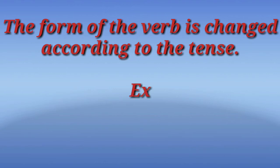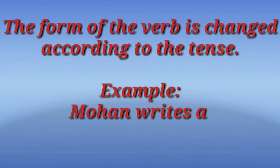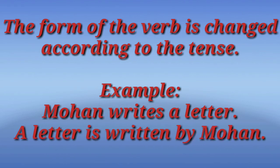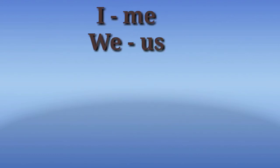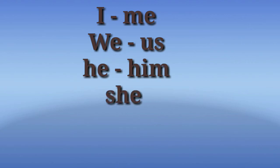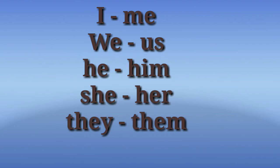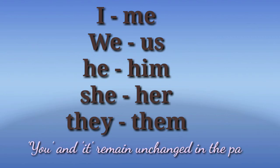The subject of the active voice is expressed as 'by' plus agent in the passive voice, becoming a prepositional phrase. The form of the verb is changed according to the tense. For example: 'Mohan writes a letter' in active voice becomes 'A letter is written by Mohan' in passive voice. If the subject or object in the active voice is a pronoun, it changes its form as shown in the table, except 'you' and 'it,' which remain unchanged in the passive form.